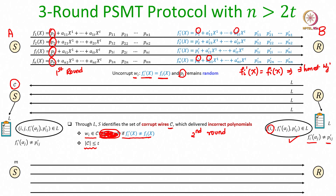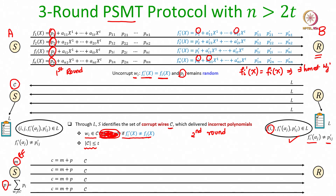Now in the third round, the sender has a message m belonging to field F, which is the sender's input for the PSMT protocol. The sender computes the pad P as the summation of the constant terms of all the polynomials delivered over wires outside the set C — meaning those polynomials were delivered correctly to the receiver, so their constant terms are the same for both sender and receiver. The sender then broadcasts the identity of the faulty set of wires (those that delivered incorrect polynomials) along with the OTP encryption.